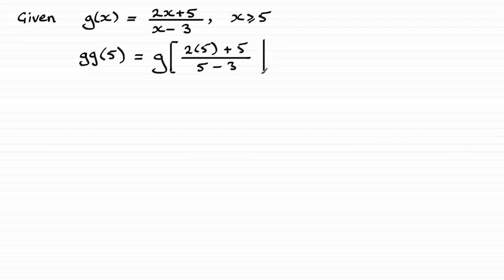So just close that off there. And if we work this out we've got g of, and we've got 10 here plus 5, that's 15, divided by 2 which is going to be 7.5.